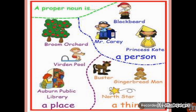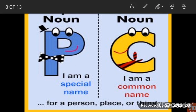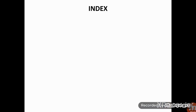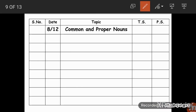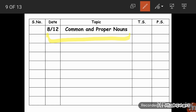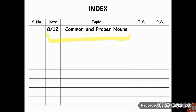To revise: if we give a specific name to a person or place, it becomes a proper noun. A proper noun says 'I am a special name for a person, place, or thing,' while a common noun says 'I am a common name for a person, place, or thing.' This is what you need to understand. Now let's do the exercise in our notebook. Your index entry is 8-12 — December is the 12th month — and the topic is common and proper nouns.